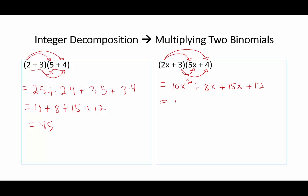So this is equal to 10x² plus 23x plus 12.